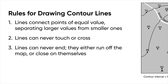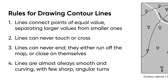Additionally, the lines should never just end — they can't stop in the middle of the map. One of two things can happen: they either need to run off to the edge of the map, or they need to close back on themselves, creating a rounded shape. That's what we see at the tops of hills and mountains. Finally, contour lines are almost always smooth, curving lines. We don't see sharp, angular turns, and while it is possible, that tends to only happen in extremely rugged landscapes.